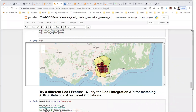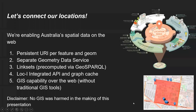The goal of Loki is to enable Australia's spatial data on the web — persistent identifiers for features and geometry, a separate geometry service providing different APIs, link sets which are the links between geographies, and the Loki integrated API and graph cache. Hopefully I've shown that we can have a GIS capability over the web without needing to launch traditional GIS tools.